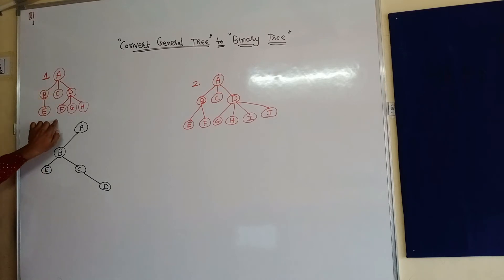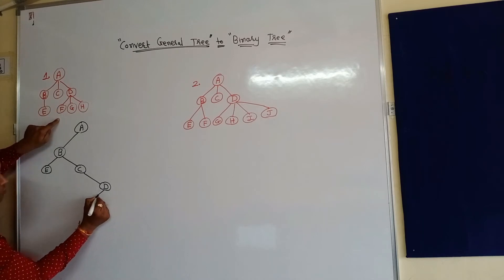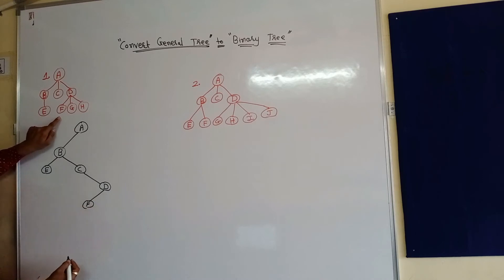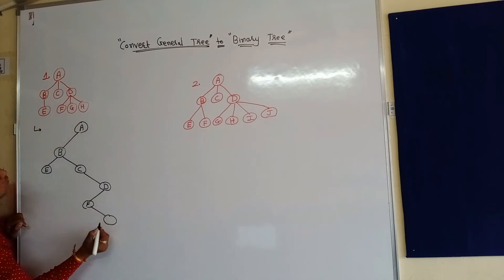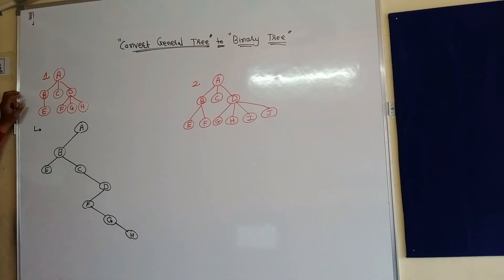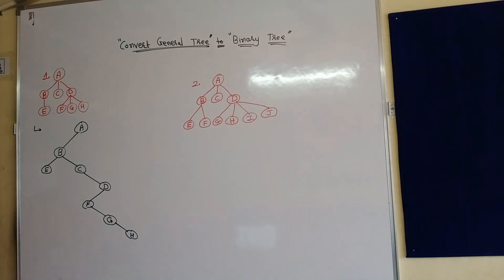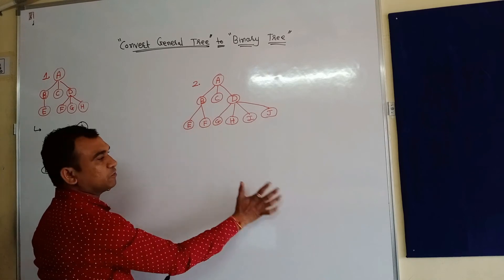D node has three children. The first left-most child will be the left node of D, so D will have left node F. The remaining nodes are placed as right nodes of each other: F's right is G, and G's right is H. So this general tree is now converted into a binary tree.